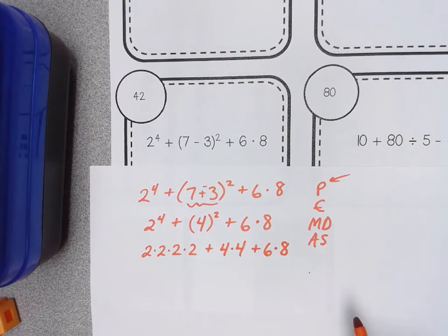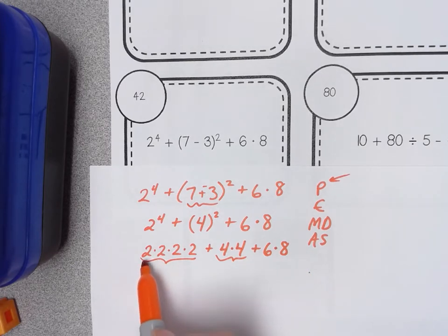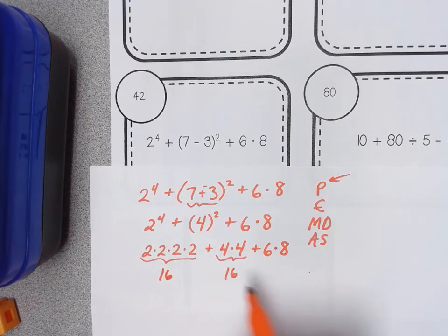Well really I kind of took care of exponents. I turned them into more of a multiplication right? Or I could go ahead and go back in and kind of simplify these pieces. So what does it mean to have 2 times 2? Well that's 4. 4 times 2 is 8 and 8 times 2 is 16. And here 4 times 4 is another 16.